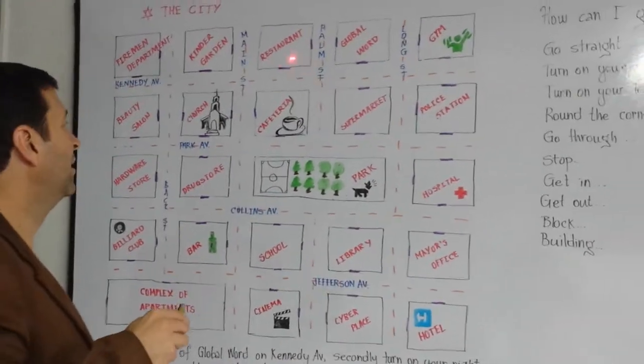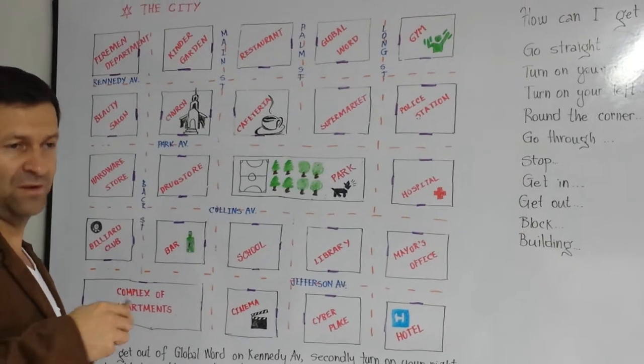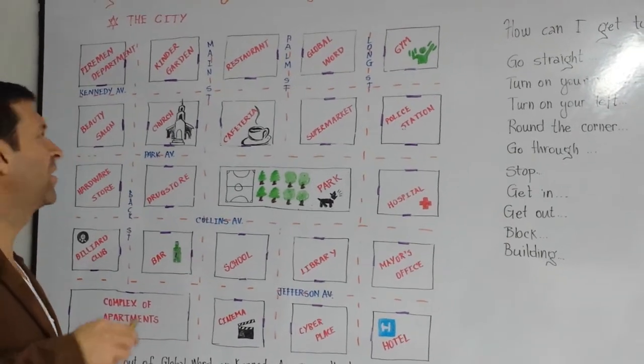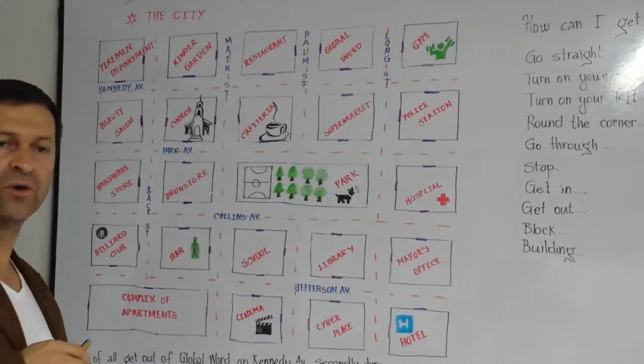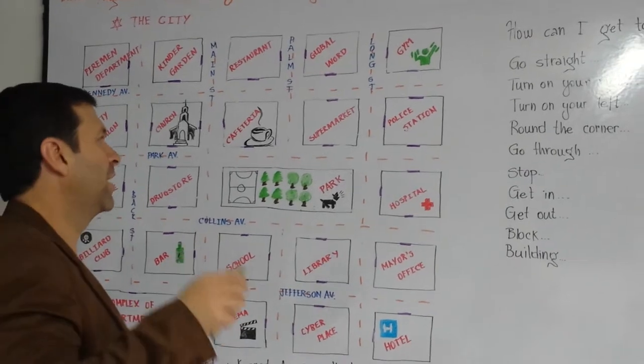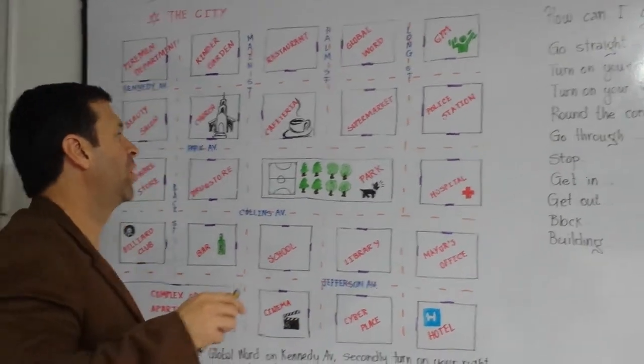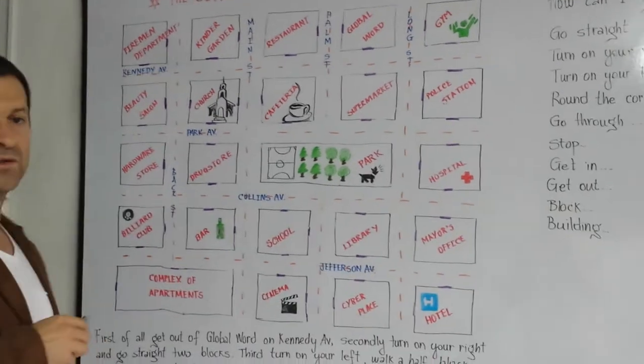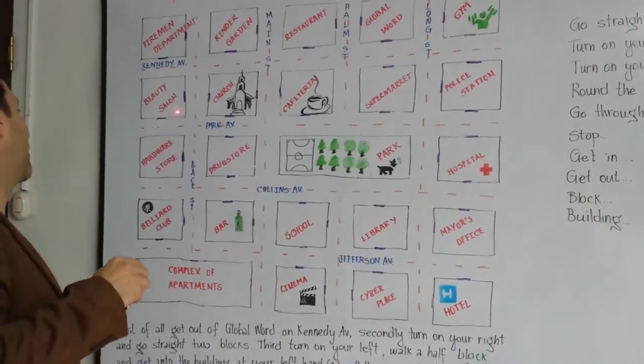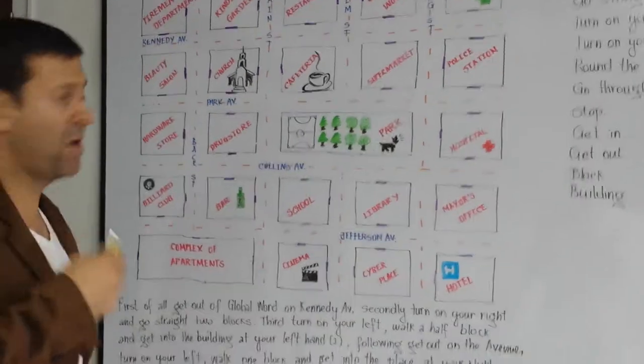Repeat: restaurant, what is that? Recuerden que la AU suena como una O, restaurant. Global work, gym, this is gimnasio, the place where we work out. Beauty salon: salón de belleza que podría ser barbary, la barbería.